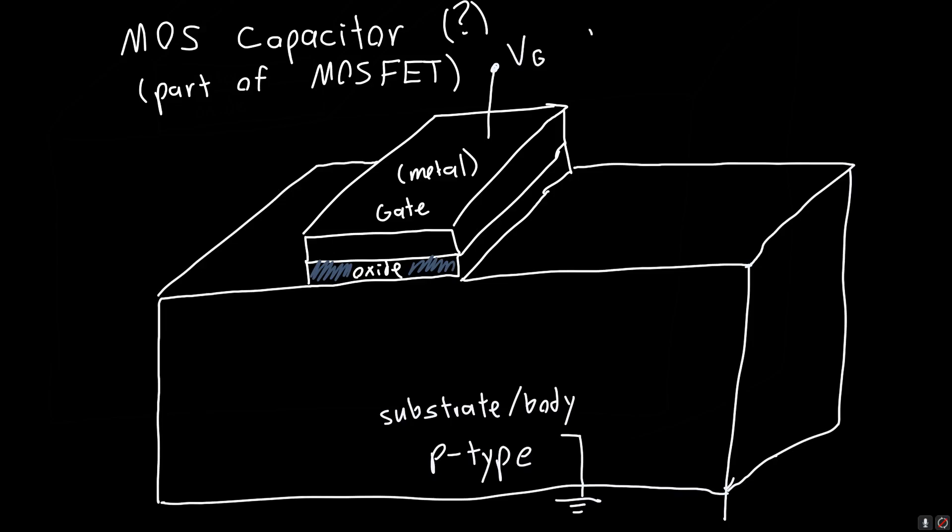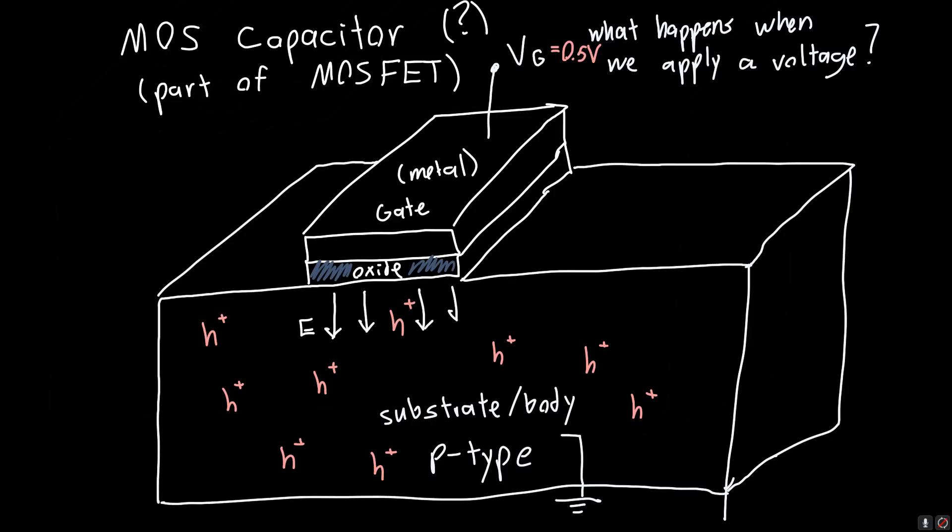And so we want to know what happens when we apply a voltage. Well so we know that we're going to have a bunch of holes floating around in here because this is a p-type material. And some of them are going to be near the gate, some of them are going to be far away. But when we apply a voltage VG, so let's say VG equals 0.5 volts, that's going to create this electric field between the oxide and the semiconductor because a voltage set up over a distance creates an electric field. And this electric field, since it's pointing in this direction, the holes are going to be repelled from the gate.